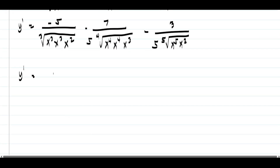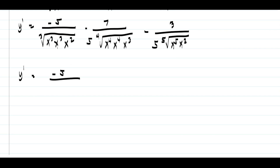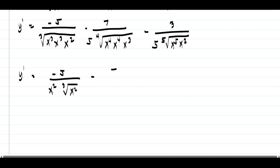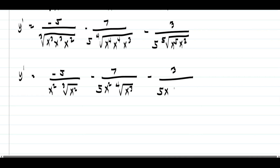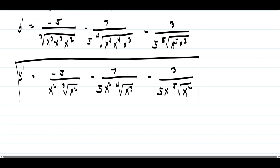Simplifying: y prime equals negative 5 — since we have two x-cubed groups, which are perfect cubes inside the radical, that pulls out as x squared, giving x squared times the cube root of x squared. Minus 7 over 5 — since we have two x-to-the-4 groups, that is x squared outside, giving x squared times the fourth root of x cubed. Minus 3 over 5 — since we only have one group of x raised to 5, that pulls out as x, giving x times the fifth root of x squared. This is the derivative of the given function.